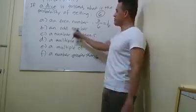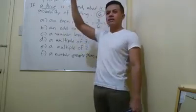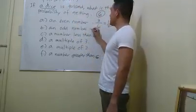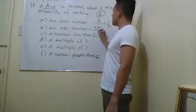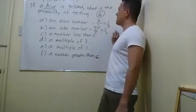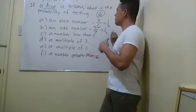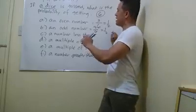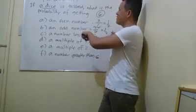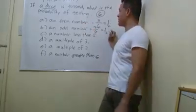For an odd number — the odd numbers for a given dice are one, three, five. So that is three over six, which is still one half. So the probability of getting an odd or even number if the dice is tossed is one half — both one half.